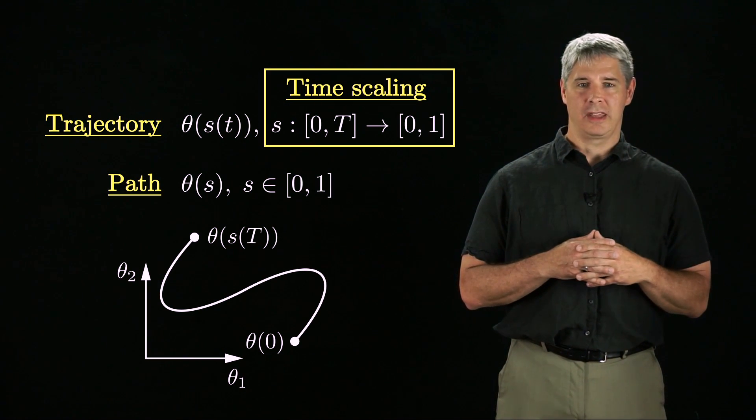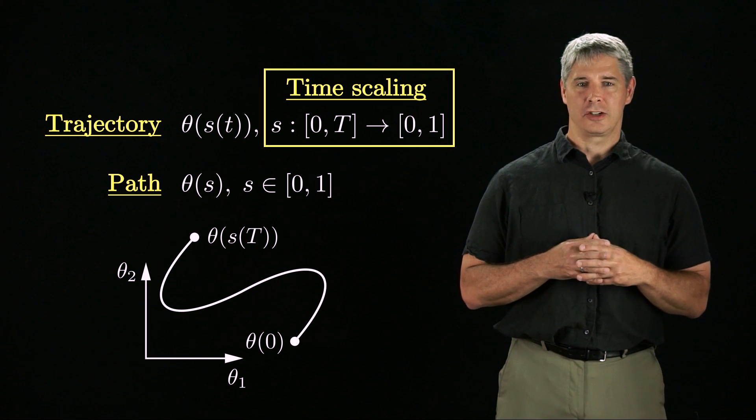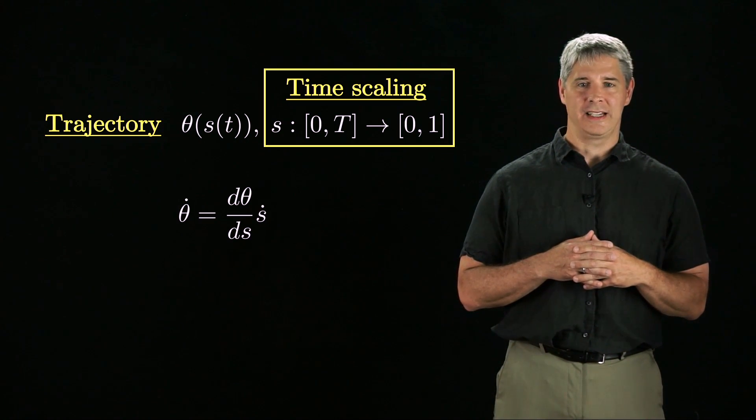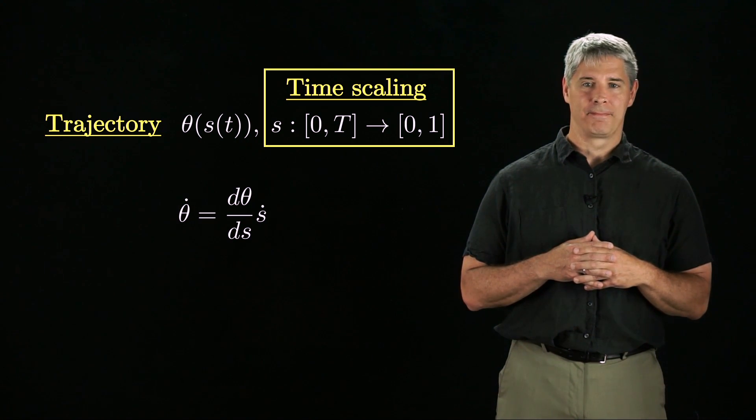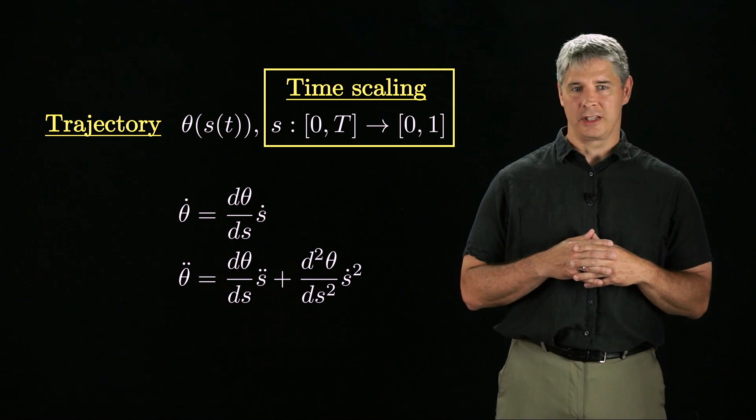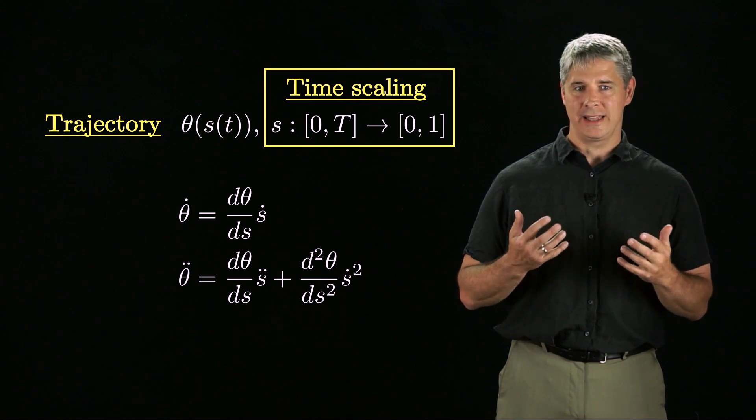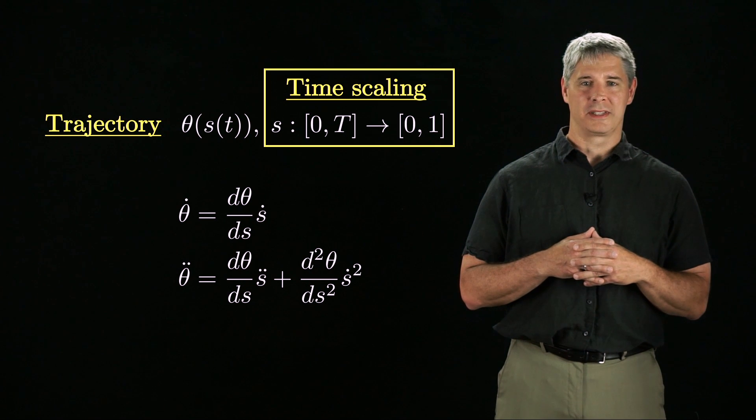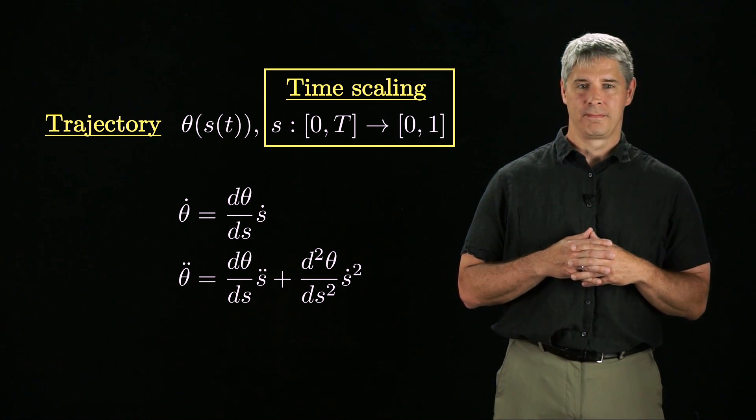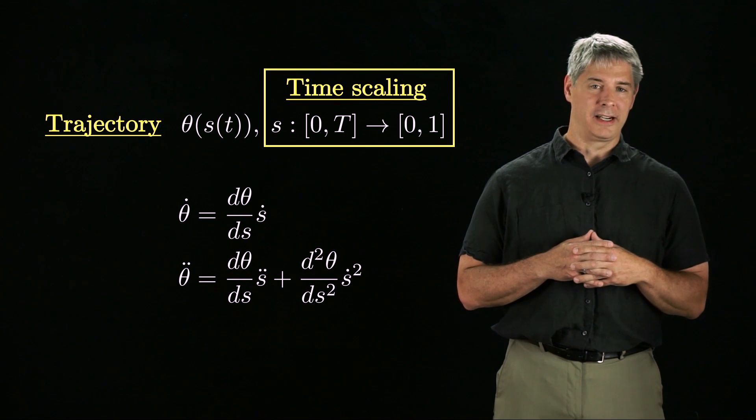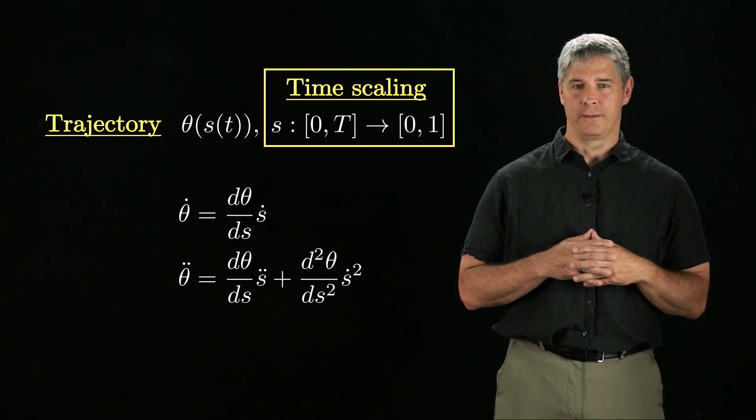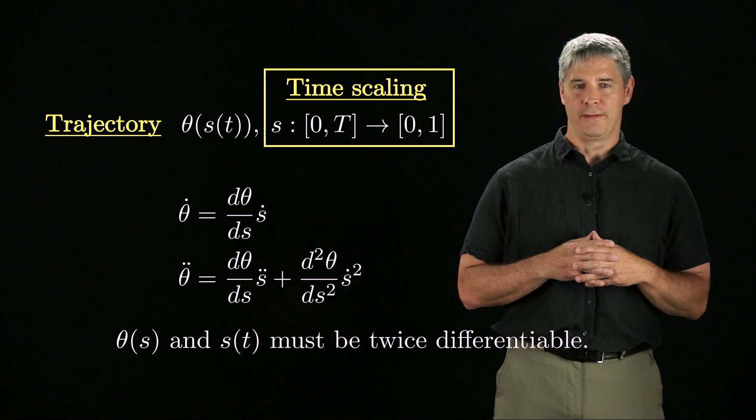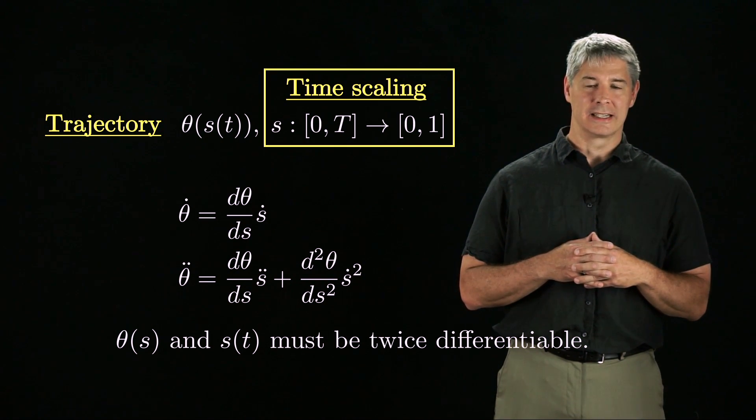Now, with the trajectory θ(s(t)), the time derivative θ̇ is determined by the chain rule to be dθ/ds times ṡ. The acceleration θ̈ is determined by the product rule and the chain rule to be dθ/ds times s̈ plus d²θ/ds² times ṡ². Since the dynamics depend on θ̈, for the dynamics to be well defined, the second derivatives of both θ(s) and s(t) must exist.